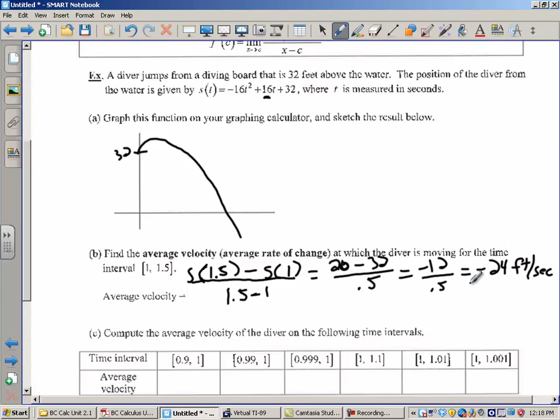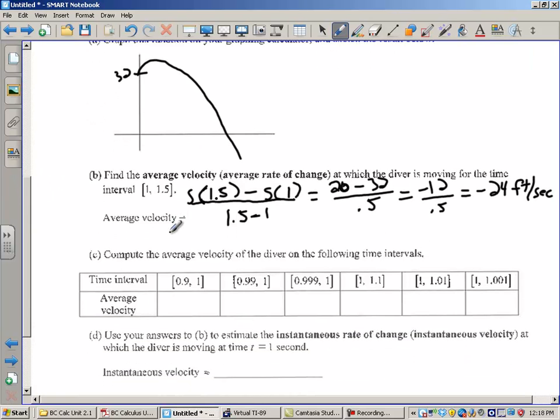And you plug these in your calculator, and I'm going to get, I get 20 minus 32 all divided by 0.5, which is negative 12 divided by 0.5, which is negative 24 feet per second. That's the average velocity on that time interval. Now, why do you think this average speed is negative? Well, you know, gravity takes over. This guy's actually falling down, so the feet are decreasing by 24 per second over that time interval from 1 to 1.5. Now, what we're going to do is we're going to make these intervals get closer and closer and closer to 1. We're interested in what's the instantaneous rate of change at 1.